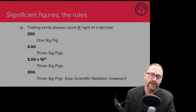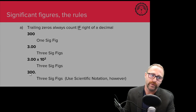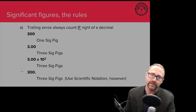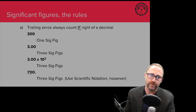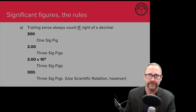Sometimes you'll see 300 written with a decimal behind it — some textbooks say this denotes that both zeros are significant, meaning three significant figures. However, I'm not going to accept on tests or homeworks you writing 300 this way. I want you to use scientific notation if you need to present 300 as having three significant figures. The only reason I'm bringing up this notation is because you might see it in your journeys in chemistry or biology.